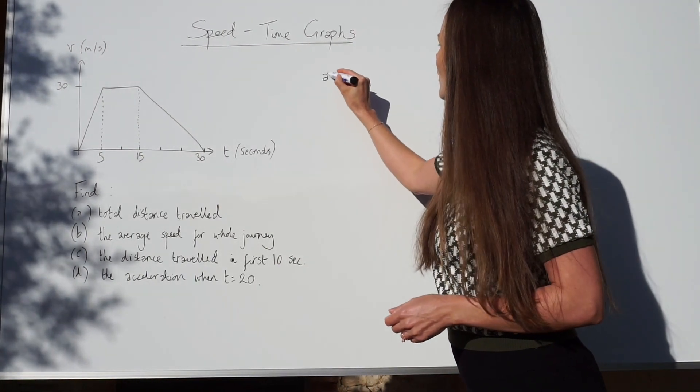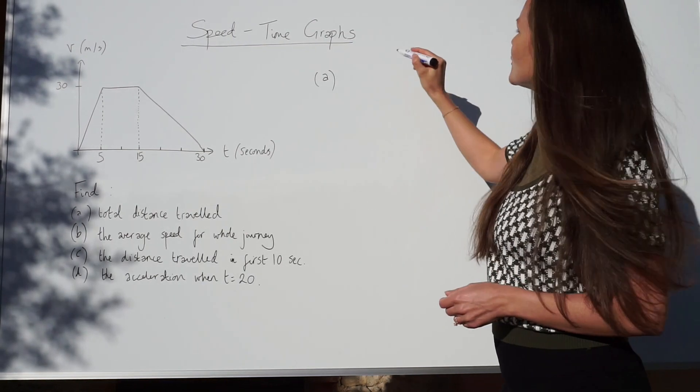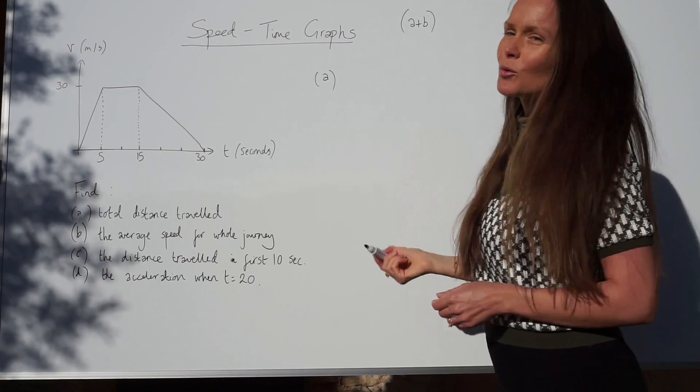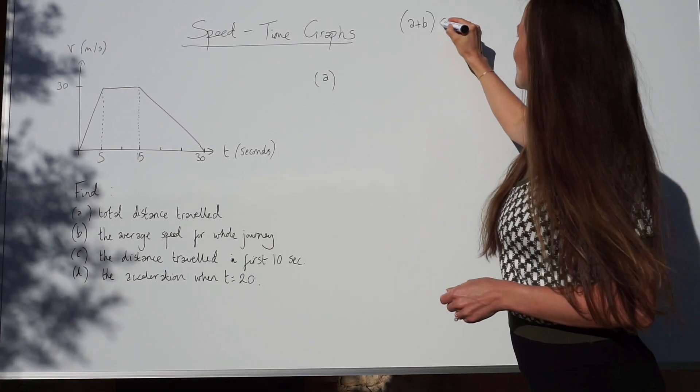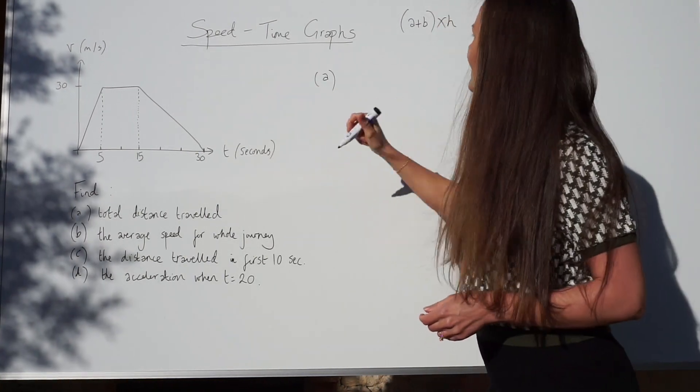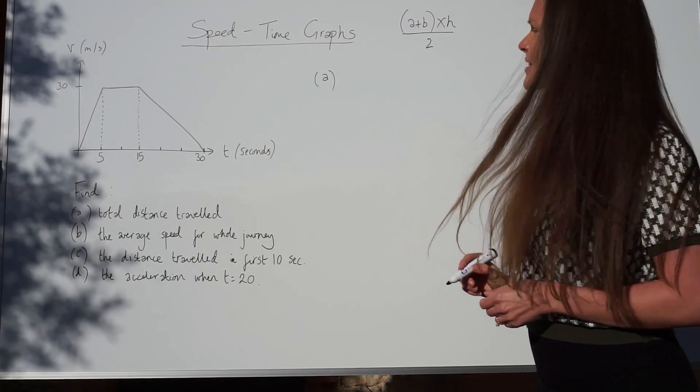To work out the area of a trapezium, you have to add the parallel sides together. I'm going to call them A and B. Then you have to multiply by the height of the shape, this distance here. And then you have to divide by two.